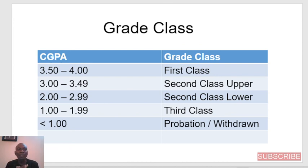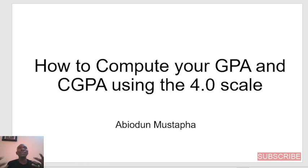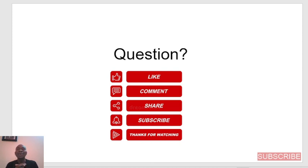I hope you got so much value from this video. For those of you whose transcripts were computed with a 5.0 scale and you want to study abroad, you can re-compute your CGPA and see how it falls on a four-point scale, to see how you fit in for international admission — maybe for a master's degree or for a PhD. This is the same thing that is done by WES and ECC and all of those result evaluation platforms. Please do well to like this video, drop a comment, share this video with your friends, and subscribe. If you have questions, drop them in the comment section. Keep excelling and keep doing excellently well. Cheers.